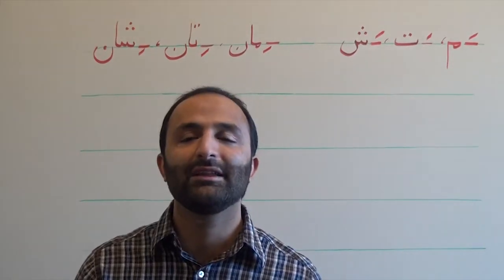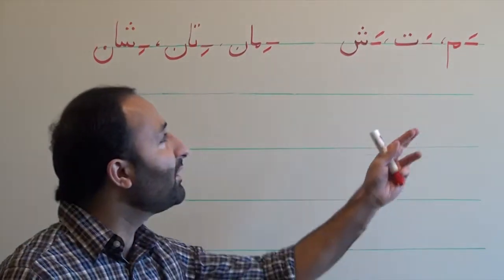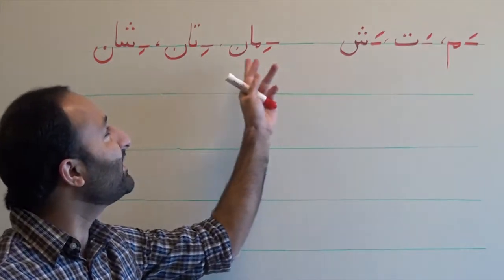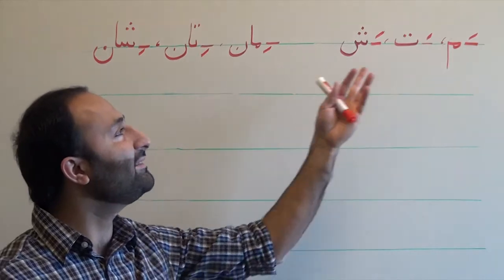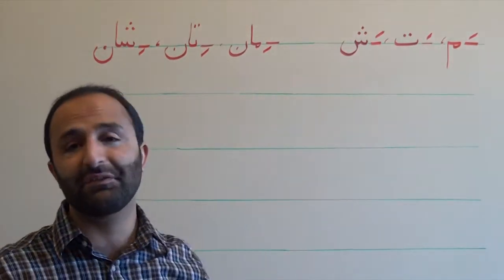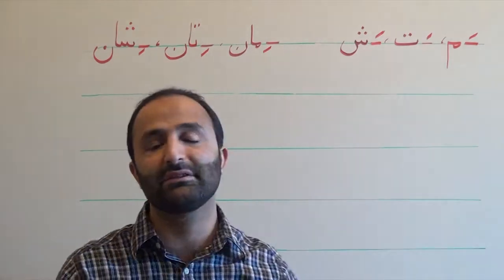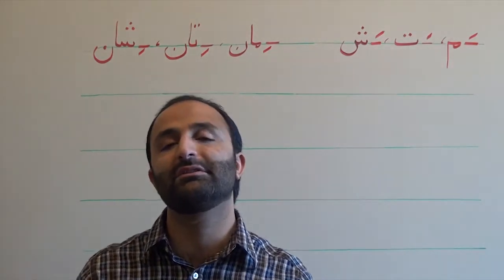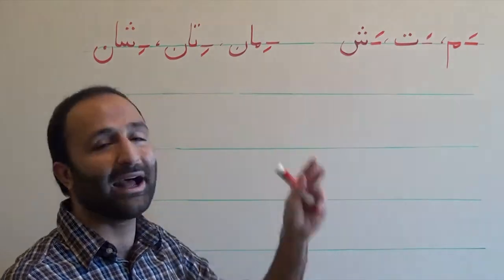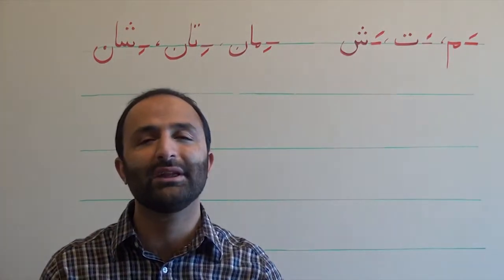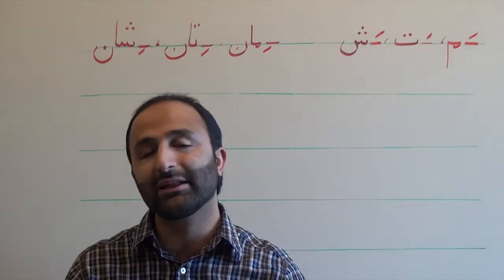Now we will start the lesson on possessive endings. In Persian there are six different endings for singular and plural, and these endings have different functions. One of the functions they have is to form a possessive noun. Whenever these endings are connected to a noun, that noun is possessive. Let's look at some examples.